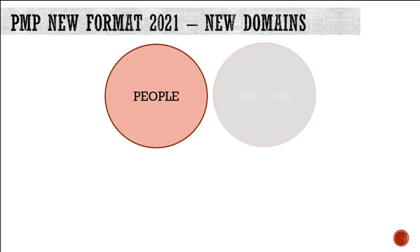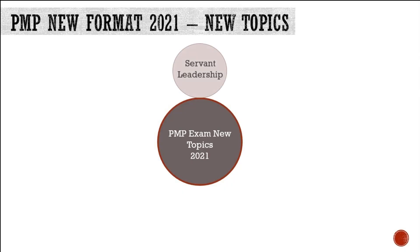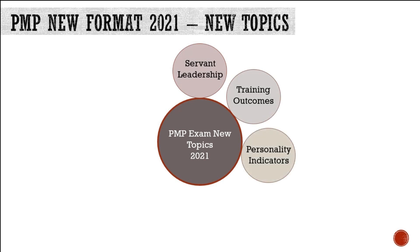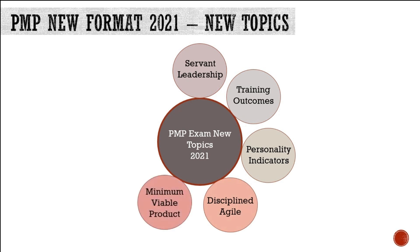In this question bank, all questions are distributed across the three new domains of the PMP exam: People, Process, and Environment. This includes the tasks and enablers for each domain. In addition, I have covered questions from the new topics of the PMP exam syllabus such as servant leadership, measurement of training outcomes, and personality indicators.